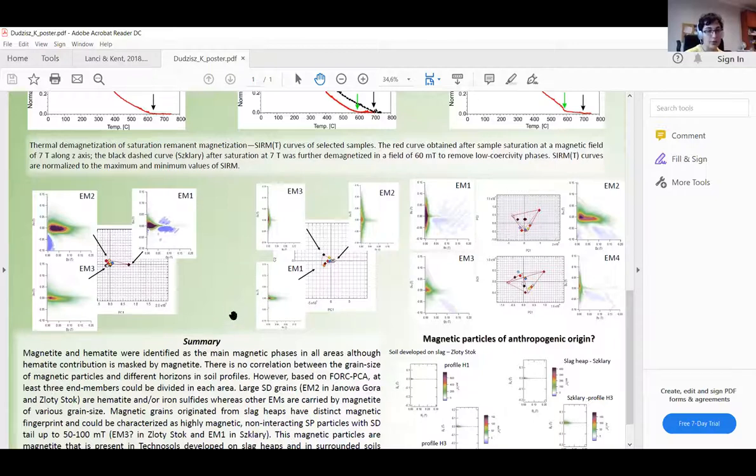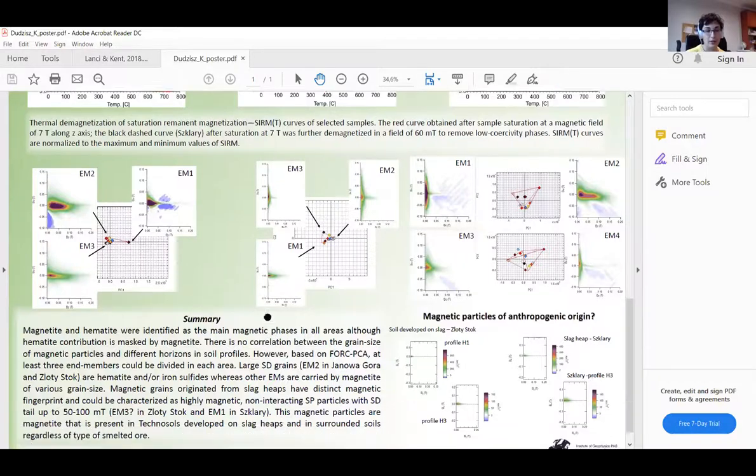However, using FORC PCA, we can observe that there is a diversification in terms of grain size of those magnetic phases. However, there is a common thing that is shown here. So in both technosols and soils surrounding mine waste, we observed quite distinct particles, not interacting SP-SD particles with varying coercivity, that most likely is of anthropogenic origin and could be also divided as separate end members in particular sites actually.